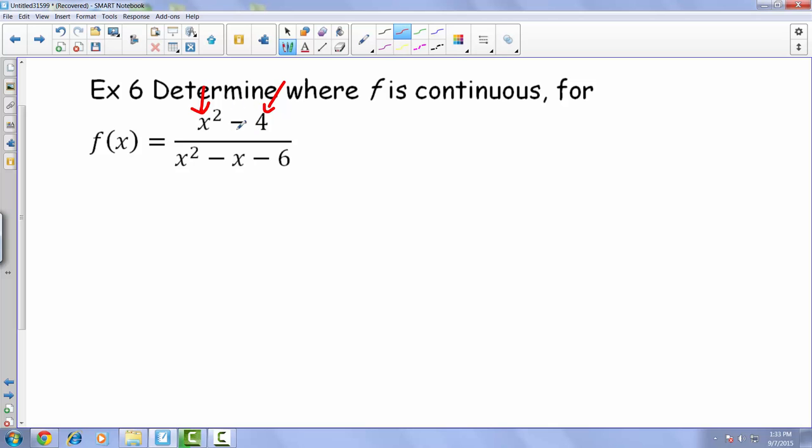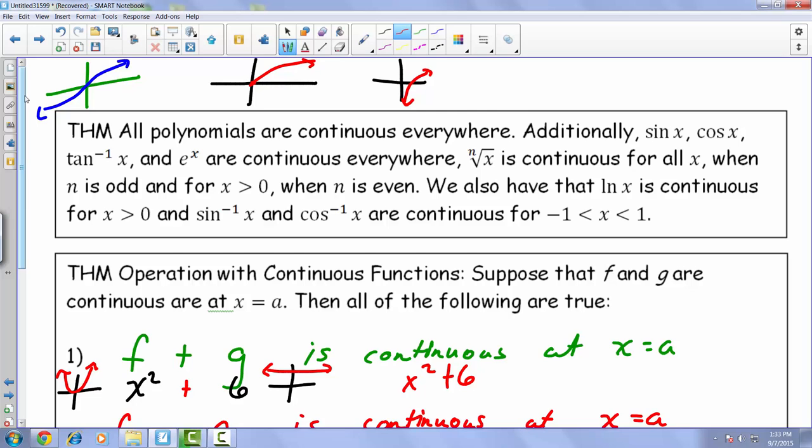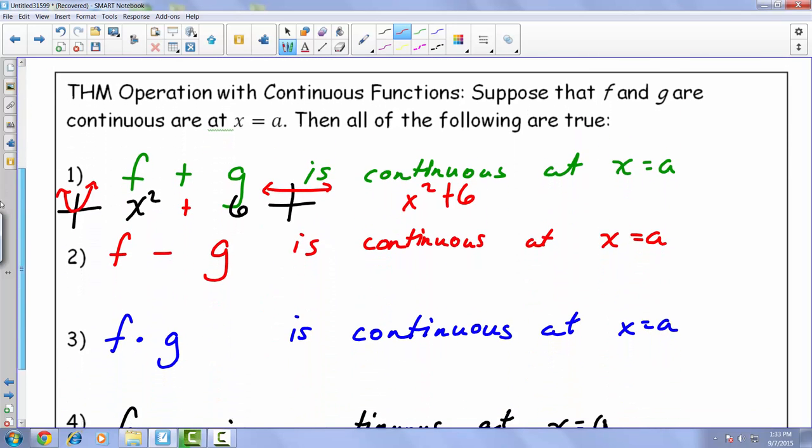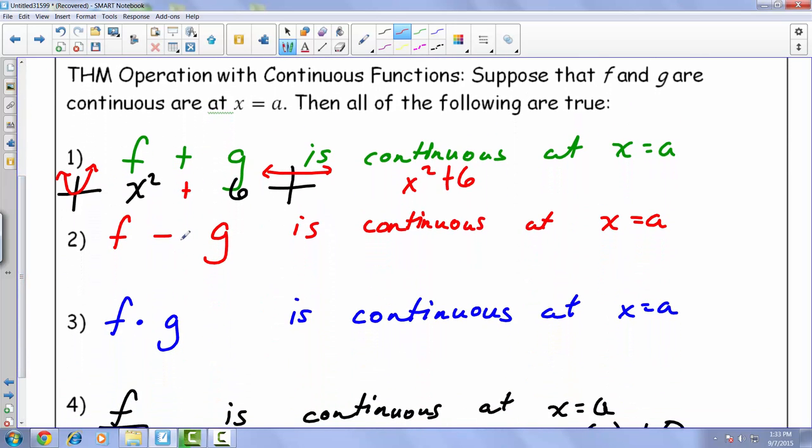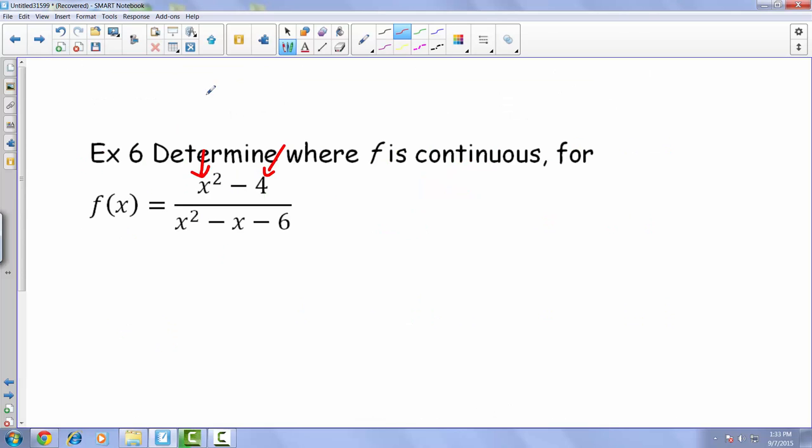And we are actually subtracting between these two. But according to our definition, as long as that first piece was continuous, the second piece was continuous, you can also use subtraction for that. So then as a result, this entire x squared minus 4 would also by default be continuous.